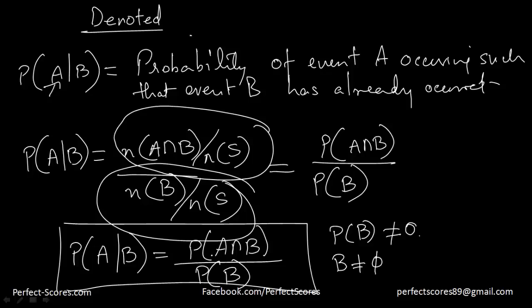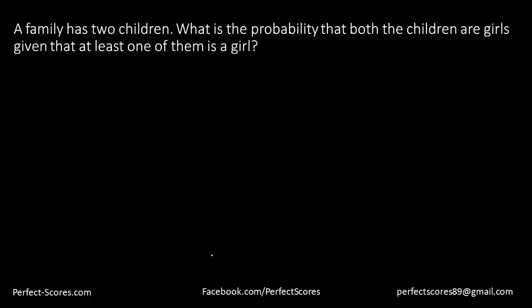Let's go ahead and solve a question to make this more clear. The question says: a family has two children. What is the probability that both the children are girls, given that at least one of them is a girl? We have two events. Let's say event R is that both children are girls, and event S is that at least one of them is definitely a girl.